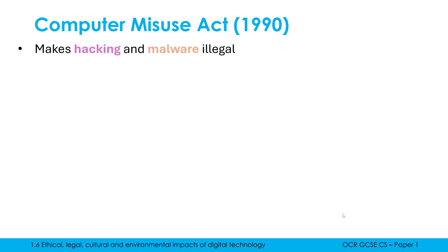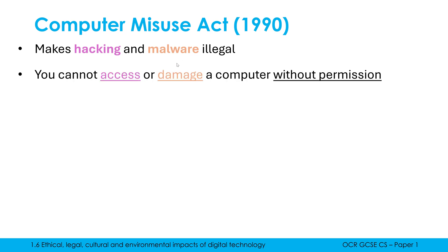The Computer Misuse Act is there to try and make hacking and malware illegal. These are called pieces of legislation — you've got to learn three of these for the exam. The word legislation you can substitute for law. Laws conventionally have the year they were first enacted in their title. What we need to memorize is the key principles of each law — roughly what each law is allowing and what it is prohibiting. What this law says is: you cannot access or damage a computer without permission. Accessing a computer without permission is called unauthorized access, and that relates to hacking. Malware is malicious software that can cause damage to a computer system, and that is not allowed unless the owner somehow gave you permission.